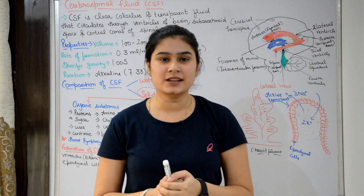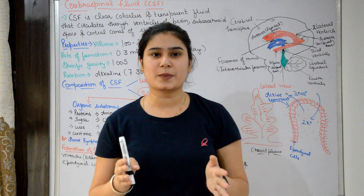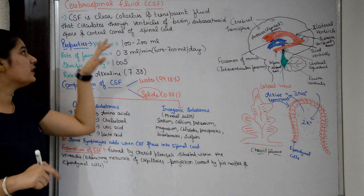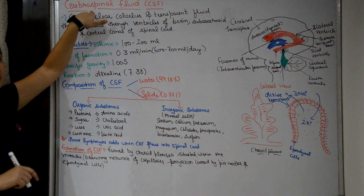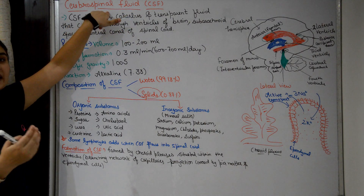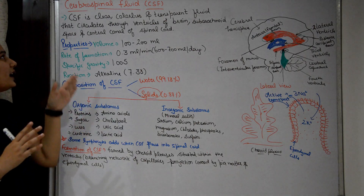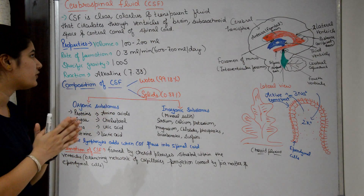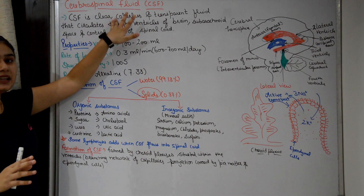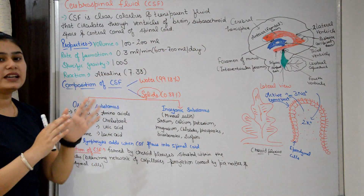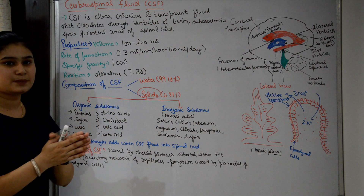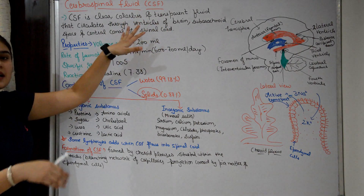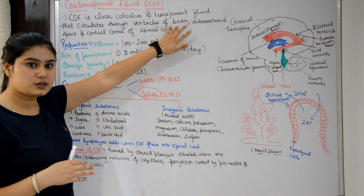Hello friends, welcome to my YouTube channel. Today's topic is Cerebrospinal Fluid, or CSF in short. Cerebral means brain, spinal means spinal cord, and fluid means liquid. CSF is a clear, colorless, and transparent fluid that circulates through the ventricles of the brain.